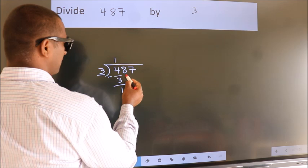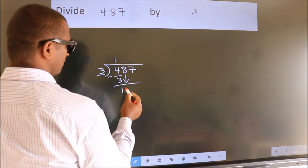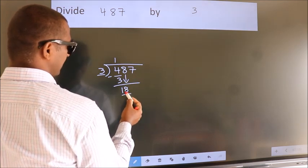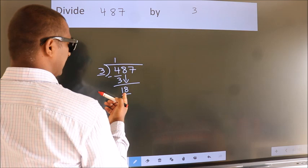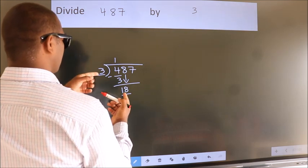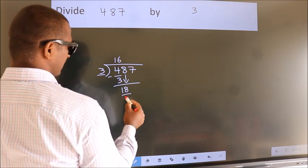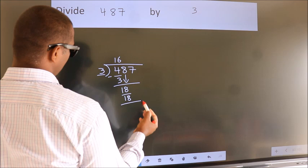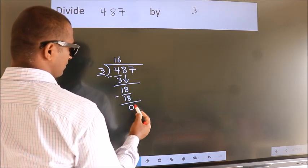After this, bring down the beside number. So, 8 down. 18. When do we get 18? In 3 table, 3, 6, 18. Now, we subtract. We get 0.